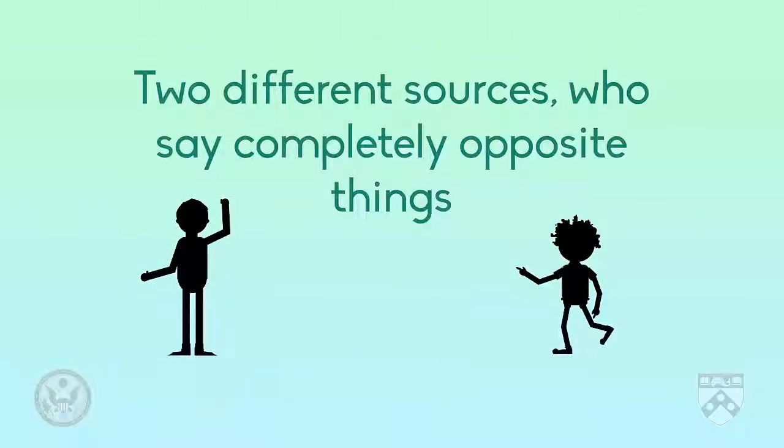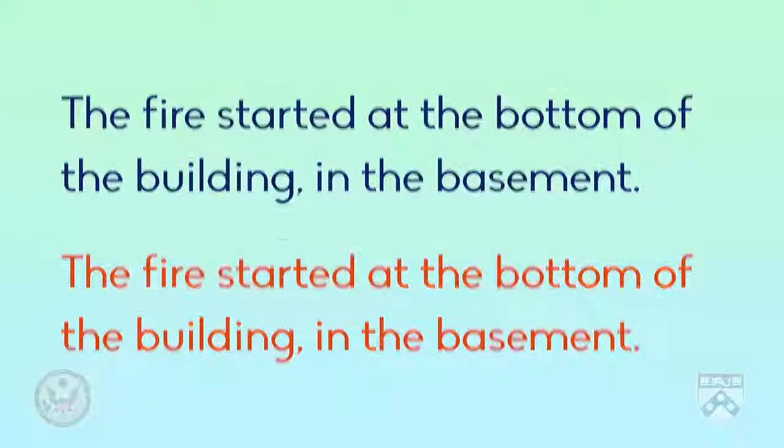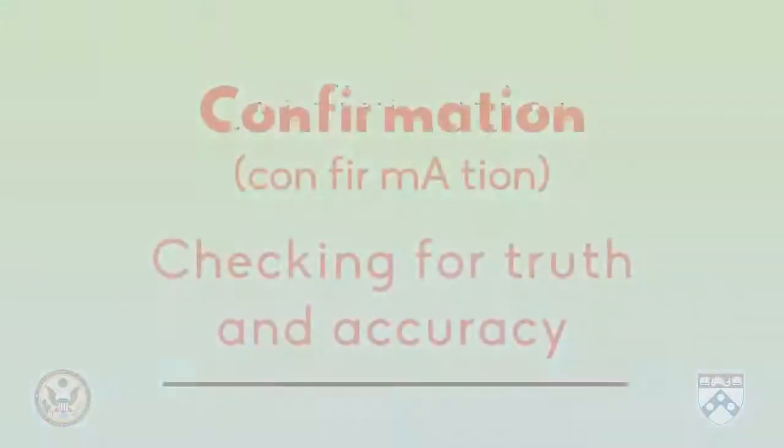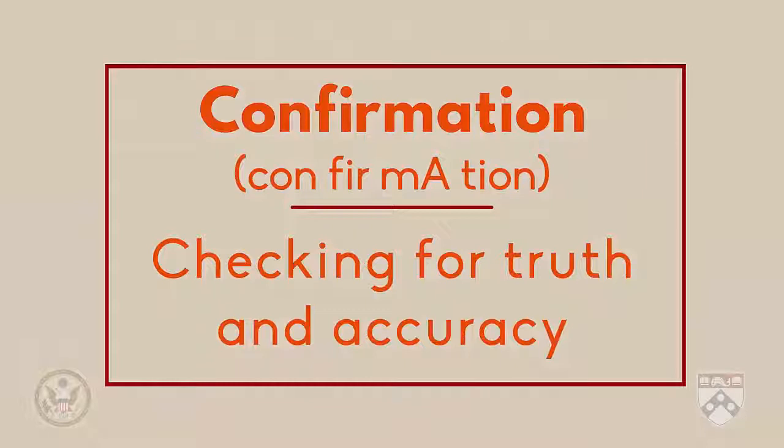Now, if the journalist decided to stop here, she has two different sources who say completely opposite things. This is better than just interviewing the landlord, but not much, because the readers don't know who is telling the truth. She needs to try and confirm one of the stories by interviewing more sources. If one person's version of the story agrees with another person's, then we call this confirmation. Confirmation means checking for truth and accuracy.